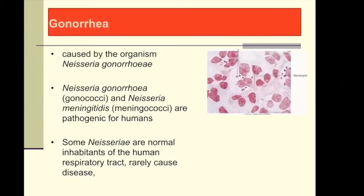The etiologic agent for gonococcal urethritis and cervicitis is Neisseria gonorrhoeae. For the Neisseria species, there are only two pathogenic Neisseria for humans: N. gonorrhoeae and N. meningitidis, which causes meningococcemia. Although they are related species, they cause two entirely different diseases, so it is very important to identify the species. If it's sexual, it pertains to Neisseria gonorrhoeae.